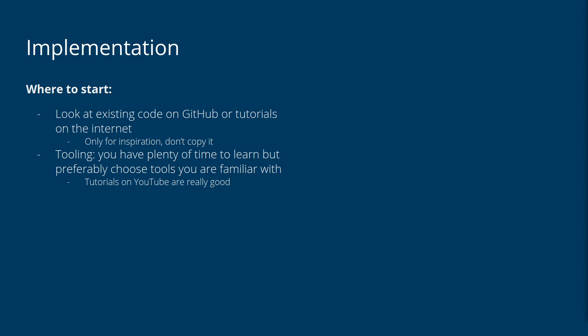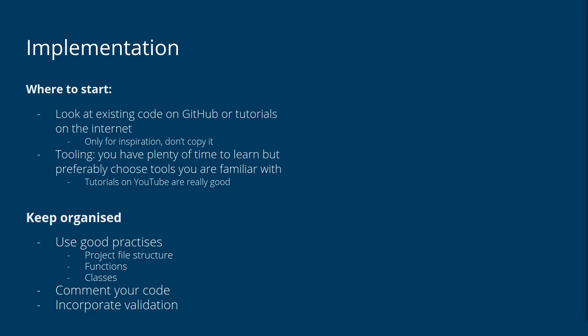Make it as easy as possible for exam boards to look through your code. Follow good programming practices: use a well laid-out file structure, use functions — you don't want everything to be a long string of spaghetti code — and use classes, which are pretty much required in the mark scheme at some point. Comment your code properly, but don't state the obvious. Also, as you go, incorporate validation — for example, if you have a form where someone enters a date or name, validate that it's in the right format, because this will make your testing section a lot easier.